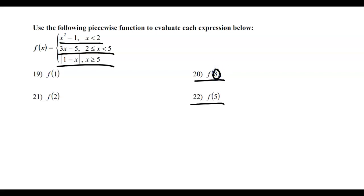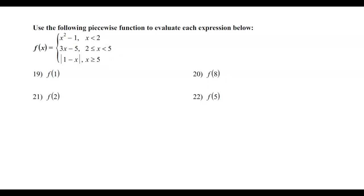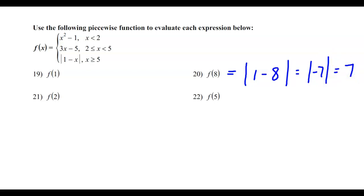Your x value is 8. Is 8 less than 2? No. Is 8 between 2 and 5? No. Is 8 greater than 5? Yes — so we're going to plug it into the absolute value piece. The way to know which piece to use is to look at the inequalities and figure out which one fits your value. So we plug in 8: the absolute value of 1 minus 8 is the absolute value of negative 7, which equals positive 7. So the answer for number 20 is 7.